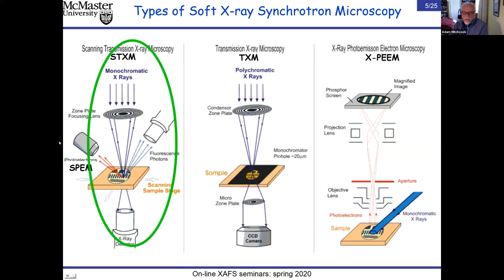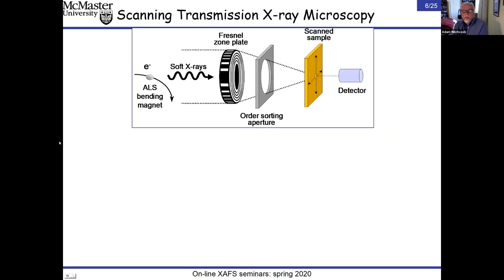Historically STXM started around 1980, but the spectroscopic variant really took off in the early 1990s. Basically we have a beamline on a synchrotron providing monochromatic X-rays that illuminate a Fresnel zone plate—a marvel of modern nanotechnology—which focuses about 10–15% of the light down to a spot of order 20–30 nanometers in most instruments today.